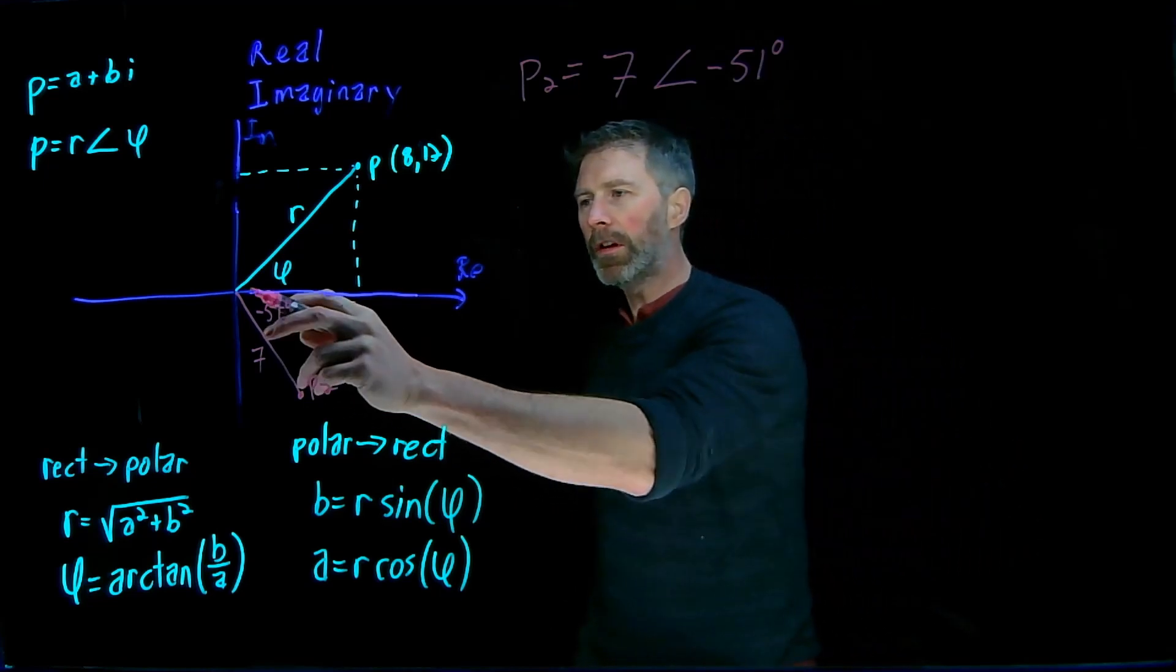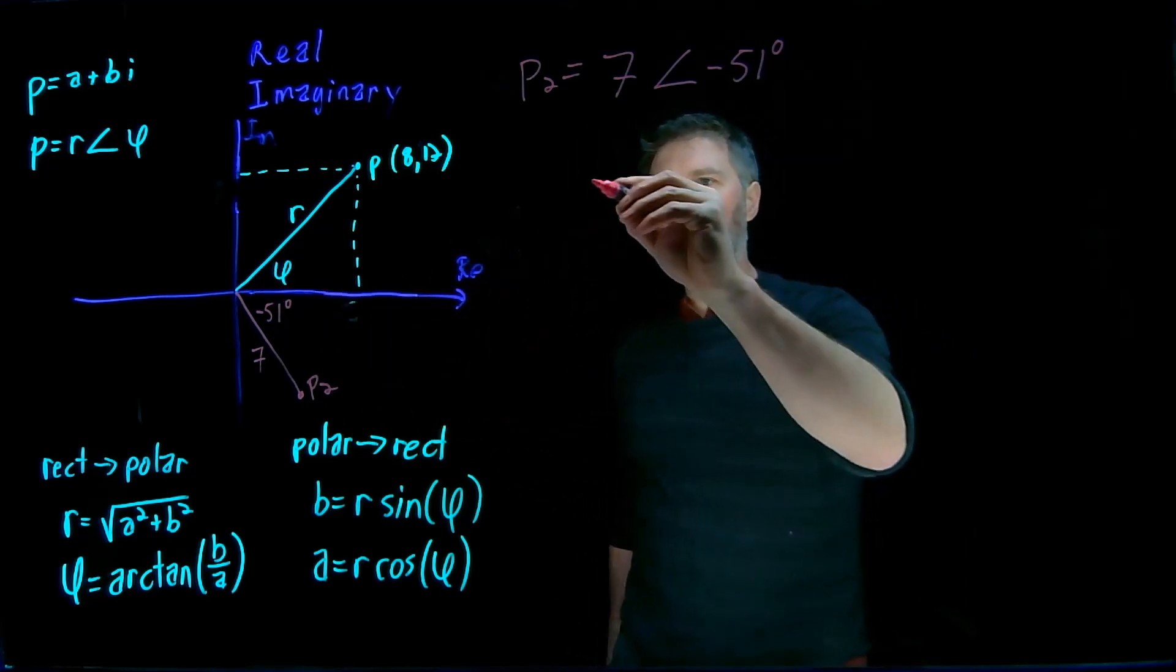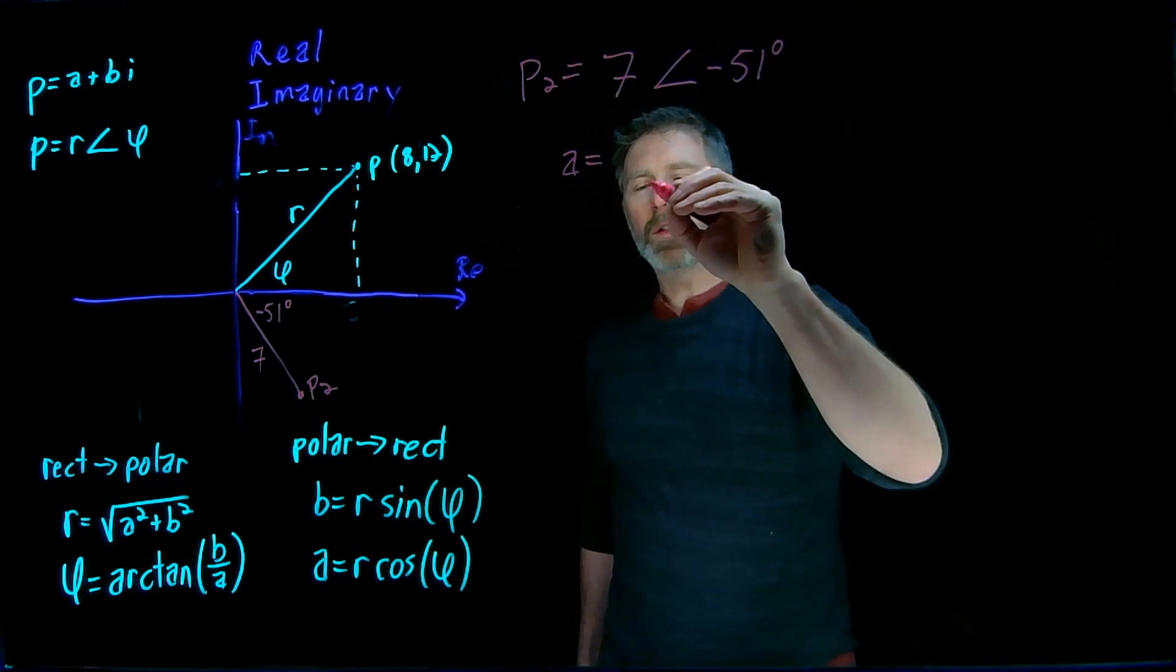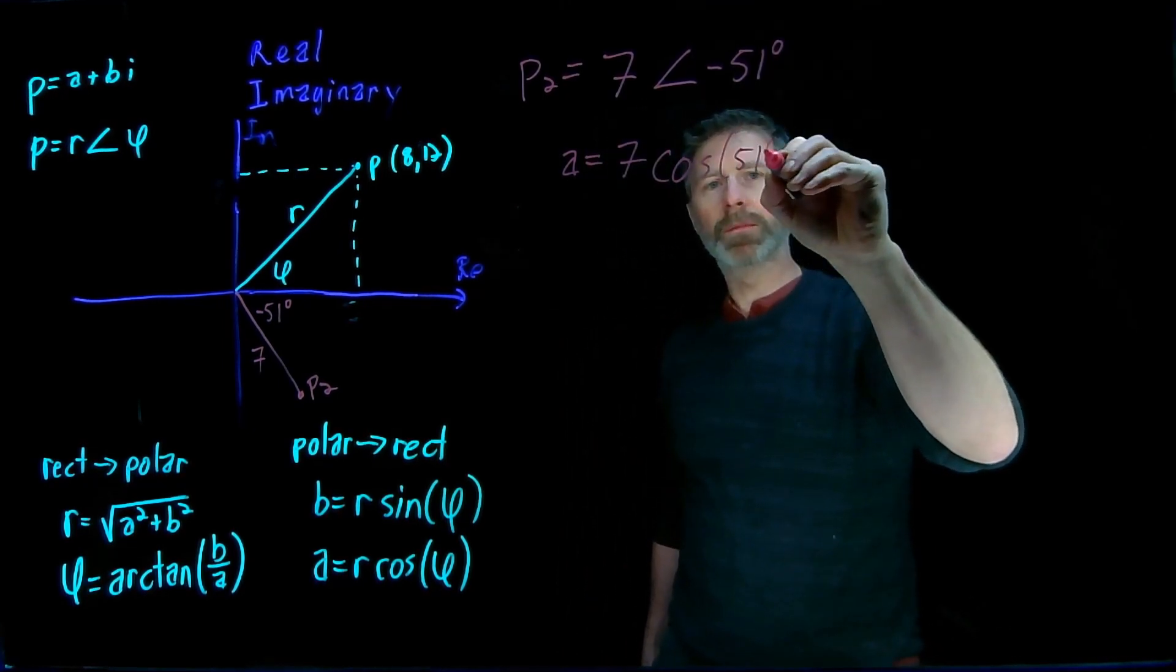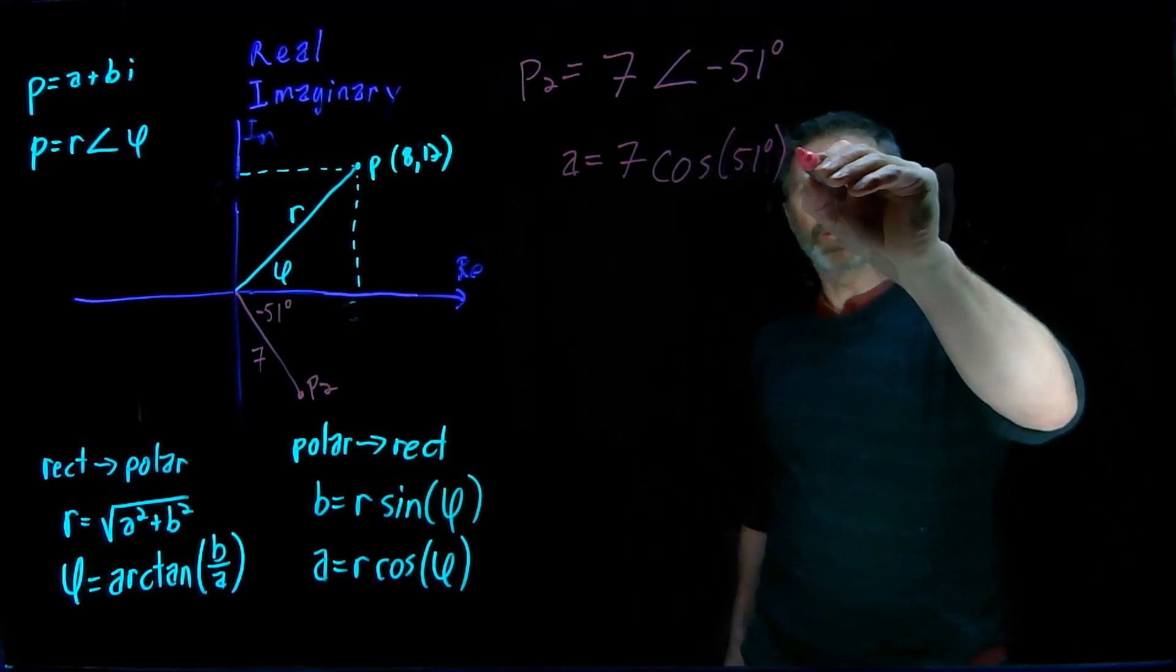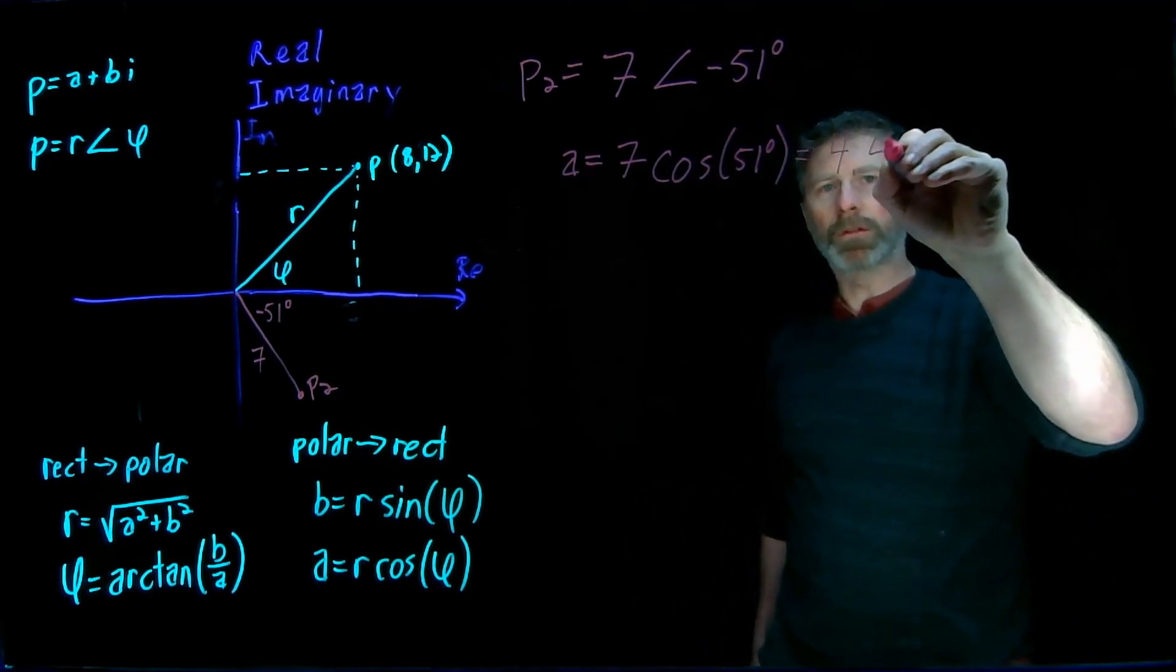Well, the imaginary, or the real part of that point is equal to 7 times the cosine of 51 degrees. And plug that into a calculator, and we get 4.4.